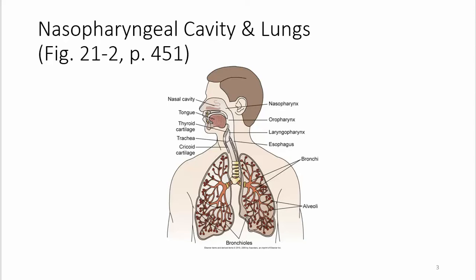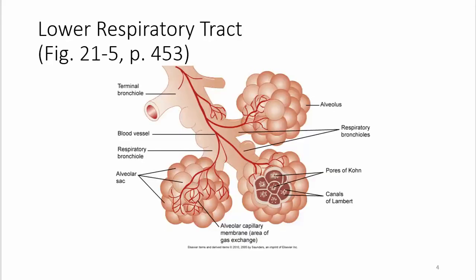Then we go into the lower respiratory: the bronchi, from the primary bronchi right to the terminal bronchi, and the alveoli, where gas exchange happens. There is a conducting zone down to the respiratory bronchioles. The respiratory zone is where gas exchange actually happens — respiratory bronchioles and alveolar structures. The alveolar structures look like bunches of grapes. The terminal bronchiole is where the conducting zone ends; the respiratory bronchiole actually has the ability to do gas exchange.